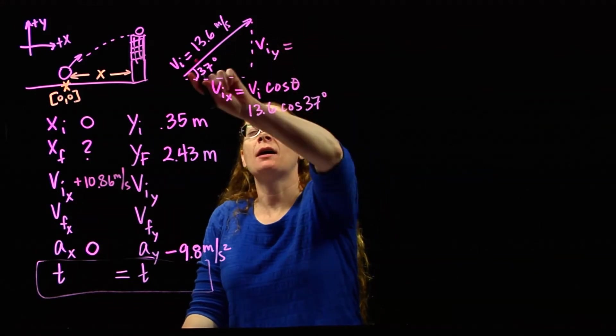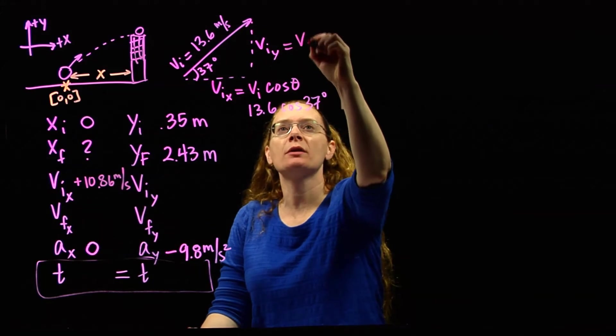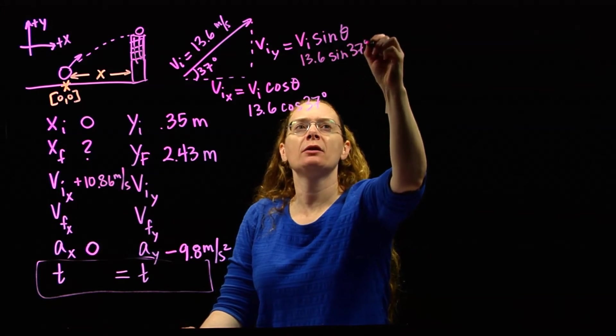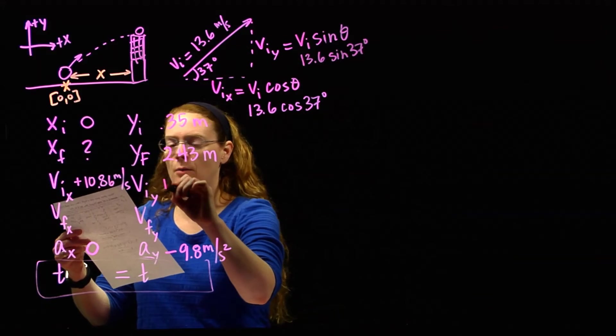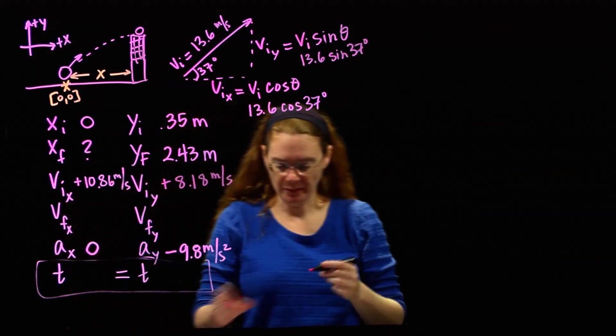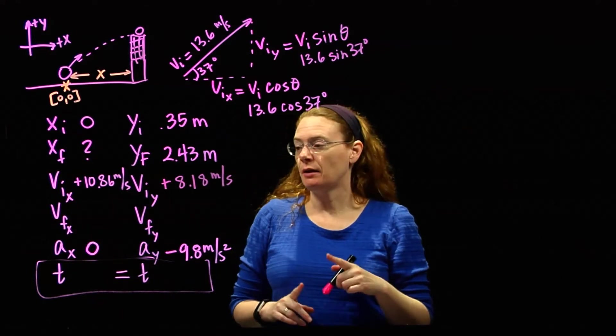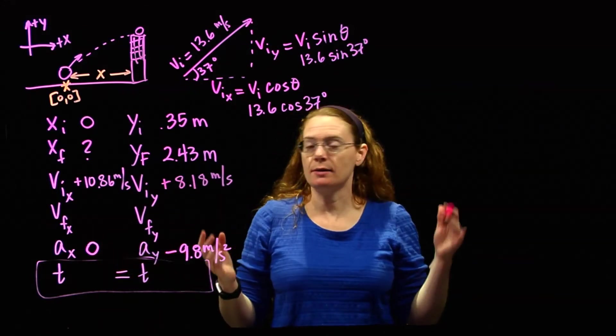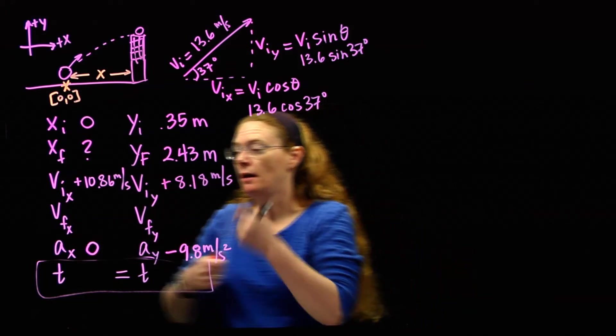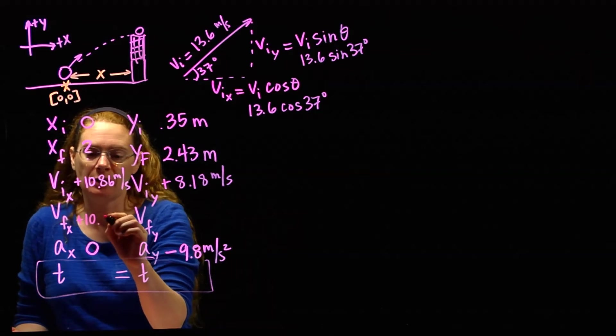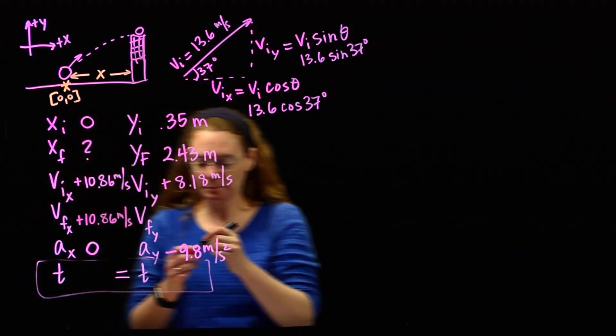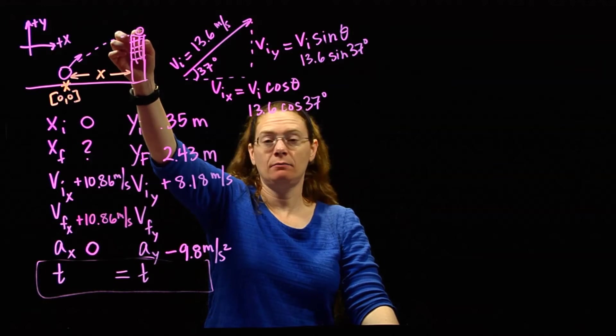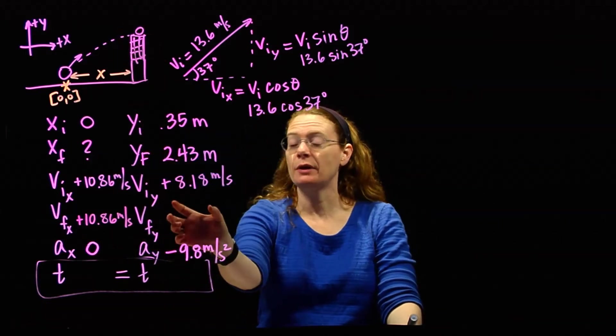Vertically, this is opposite the angle, so this is the sine component. So it's vi sine angle, which is 13.6 times the sine of 37 degrees, which gives upwards at 8.18 meters per second. And now there's one more thing we can fill in on our chart. If there's no acceleration horizontally, no acceleration means it's not speeding up, it's not slowing down, it must be at constant speed. So we know vfx equals vix as well.